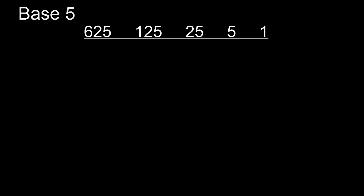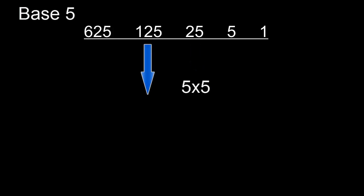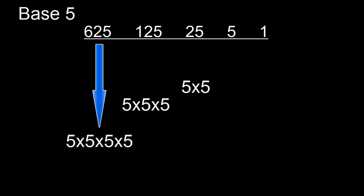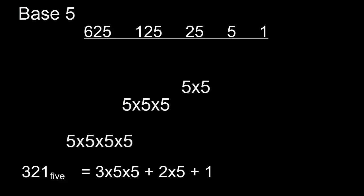How would this work in another number base? Let's take base five. The smallest units are ones, then fives, then twenty-fives — because twenty-five is five times five — then a hundred and twenty-five, which is five times five times five, and six hundred and twenty-five, which is five times five times five times five. Here's an example: three hundred and twenty-one in base five is three times five times five, plus two times five, plus one. That's the same as eighty-six in base ten.